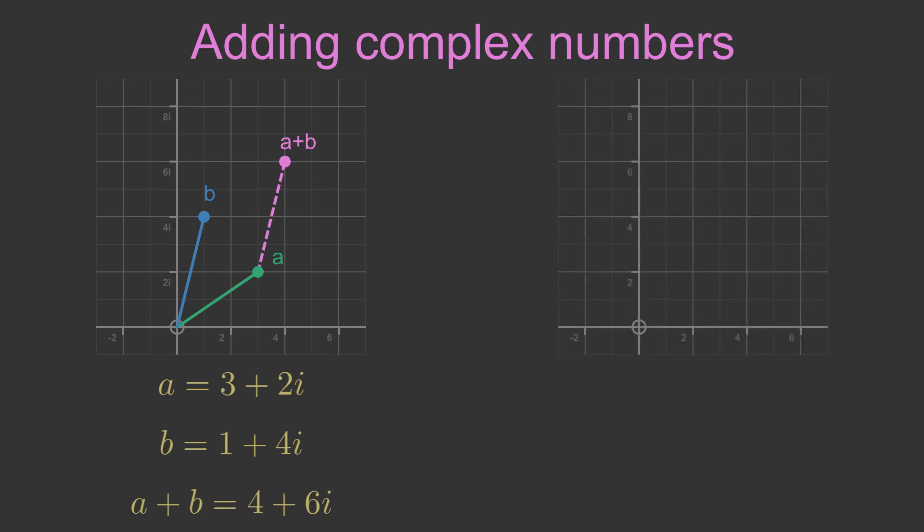The second diagram shows a normal xy plane, rather than an Argan diagram. We can represent vectors on this plane. Vector a is 3, 2. This is the vector equivalent of the complex number 3 plus 2i.